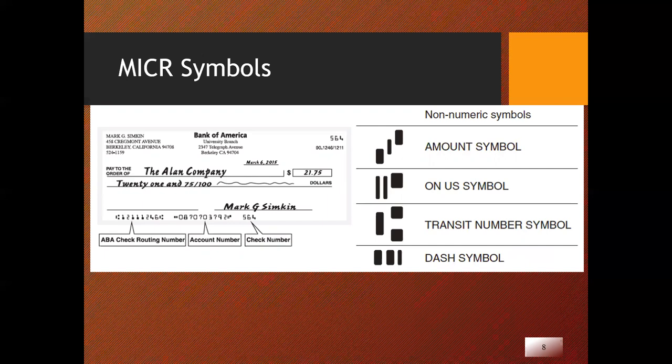These are the numbers we're talking about: the ABA routing number, the account number, and the check number. Although checks are not used often in our society, those ABA numbers are still there. These numbers and symbols were created by the American National Standards Institute. One advantage of the MICR standard is that it is machine readable by any bank, which allows the individual to write checks anywhere in the United States or Canada.